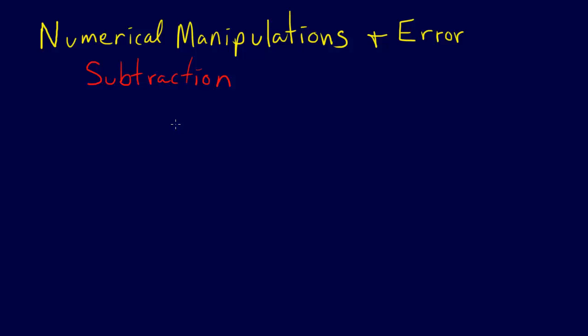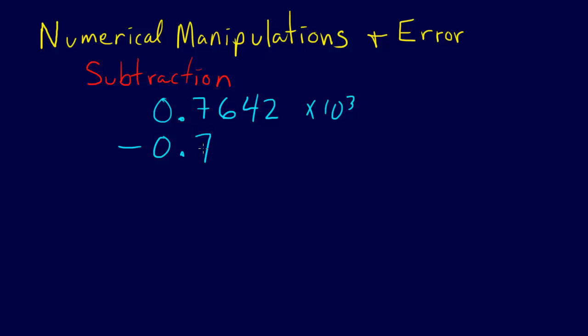And if we look at an example, we can see what happens. Let's get some numbers here where we can really see this. We're going to use 0.7642 times 10 to the third, and we're going to subtract from that 0.7641 times 10 to the third, and we're going to perform that subtraction.